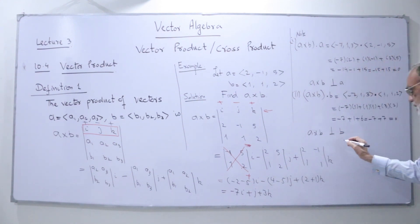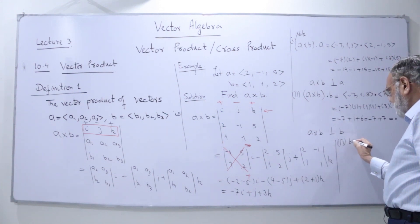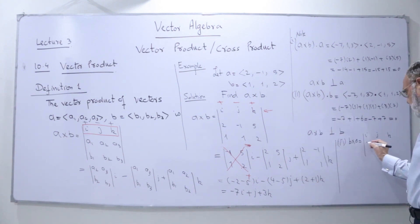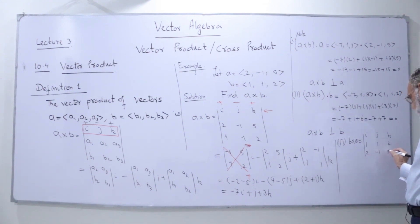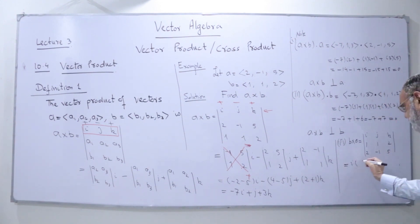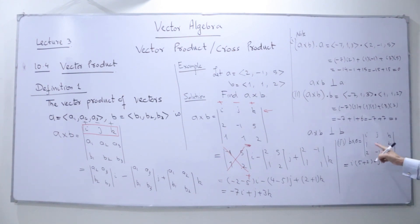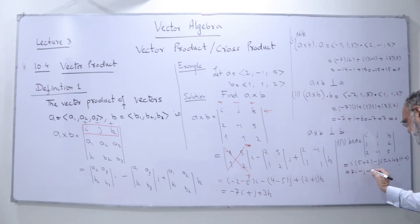Now my third result: if I interchange a and b and take b cross a, I get the determinant with i, j, k. First row is b: (1, 1, 2), second row is a: (2, -1, 5). Taking the cross product, with i the cofactor gives (5+2), minus j the cofactor gives (5-4), and with k the cofactor gives (-1 and -2). The result I get is 7i, then -j, and -3k.